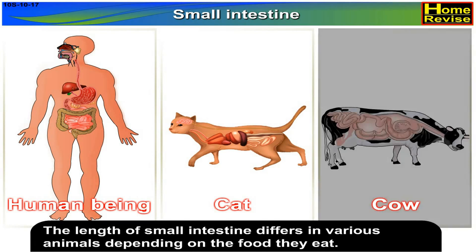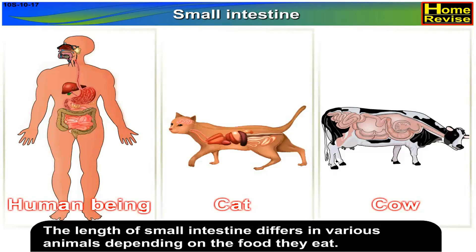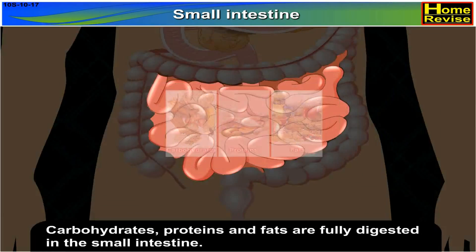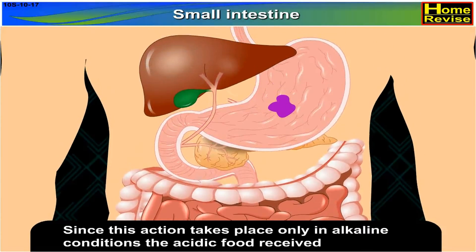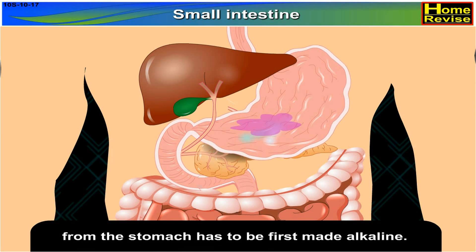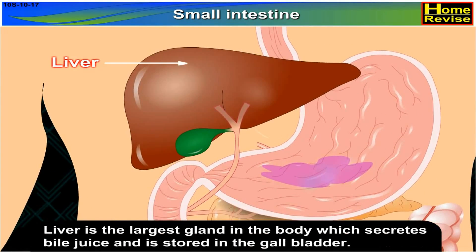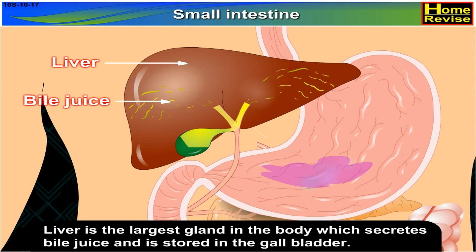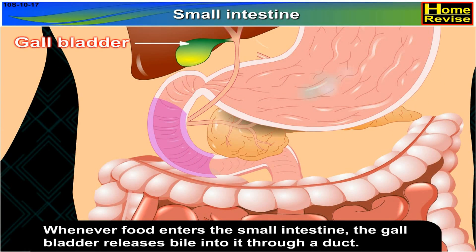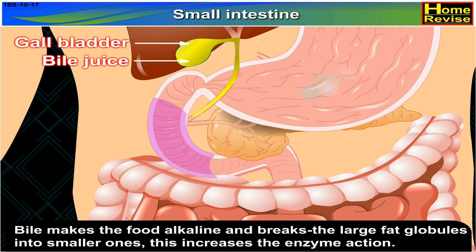The length of the small intestine differs in various animals depending on the food they eat. Carbohydrates, proteins, and fats are fully digested in the small intestine. Since this action takes place only in alkaline conditions, the acidic food received from the stomach has to be first made alkaline. The liver is the largest gland in the body, which secretes bile juice stored in the gallbladder. Wherever food enters the small intestine, the gallbladder releases bile into it through a duct. Bile makes the food alkaline and breaks large fat globules into smaller ones, increasing enzyme action.